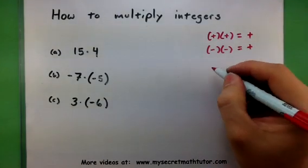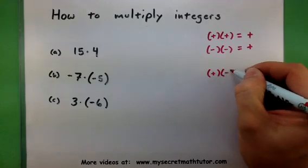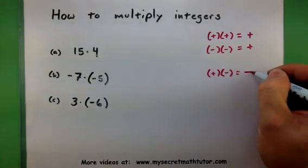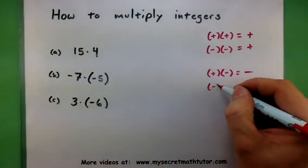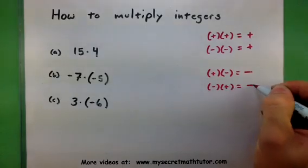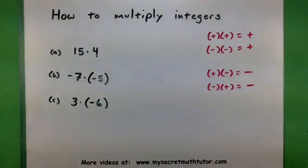If you multiply together two integers that are different signs, you will get a negative number. That's basically the rule. Let's see how it plays out in our calculations.